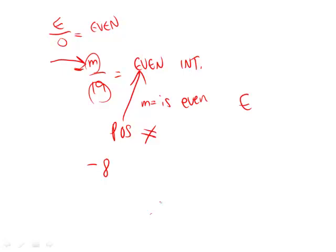It just happens to be negative. So the key here is not that m is negative, but that m simply has to be an even number.